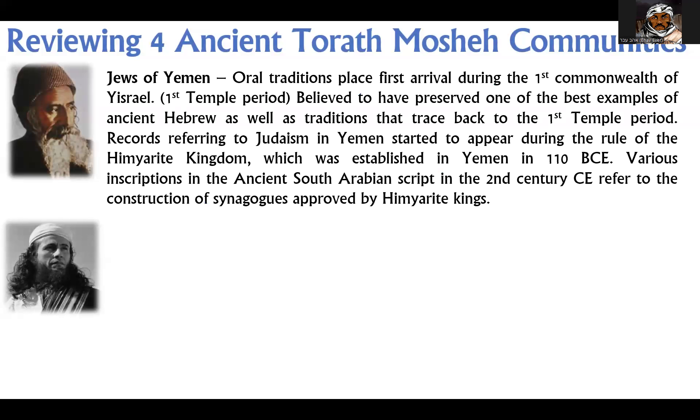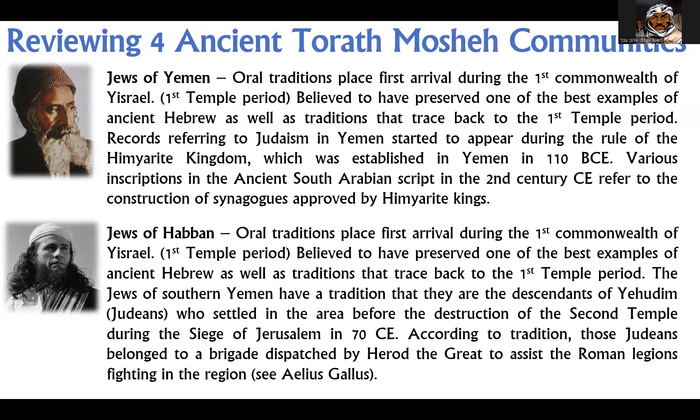I'm not going to read all this to you — you could basically pause the video and read it. It's important to look and say, who are these ancient Jewish communities? One of them is the Jews of Yemen and the Jews of Haban, which is essentially in the same location in the Middle East and Southern Arabia. These communities go back to the first temple period — according to oral tradition, the Jews of Yemen first arrived there during the first temple period. At one point, they were pretty much an independent kingdom outside of the land of Israel after the destruction of the first temple.